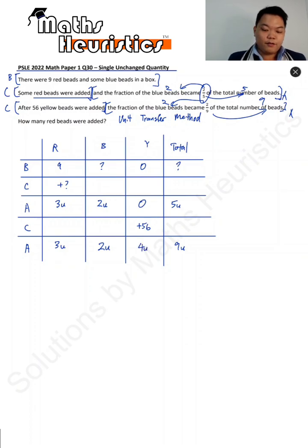Therefore, this must have been 4 units here. So if that's the case, if 0 plus 56 represents 4 units, 4 units must represent 56. Find out the value of 1 unit first. That'll be 14.